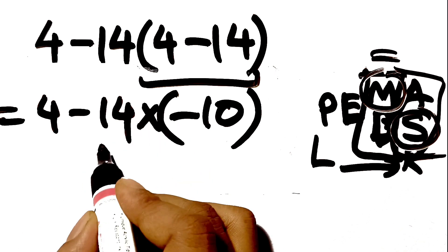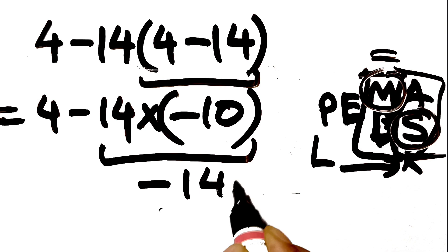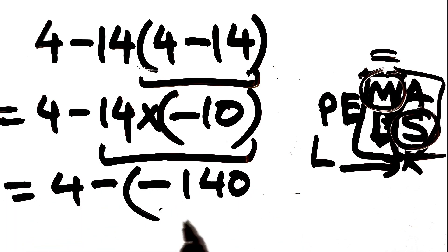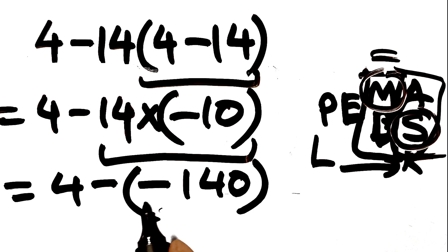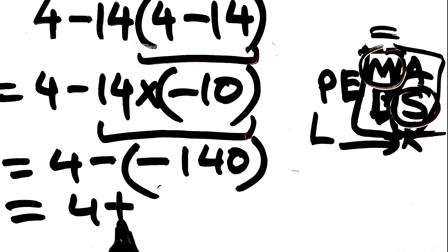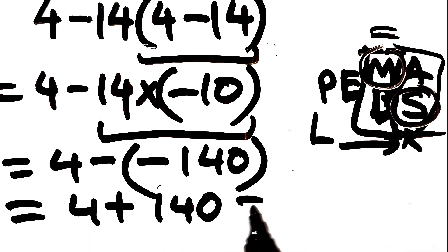14 times negative 10 gives us negative 140. The expression is now 4 minus negative 140. Remember that subtracting a negative number is the same as adding a positive number, so 4 plus 140, which equals 144.